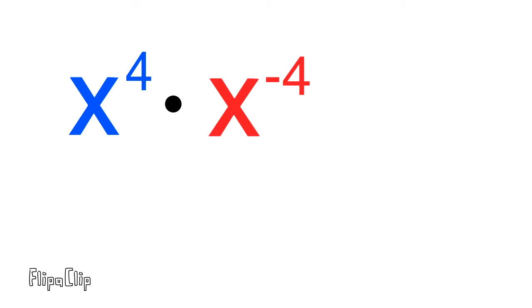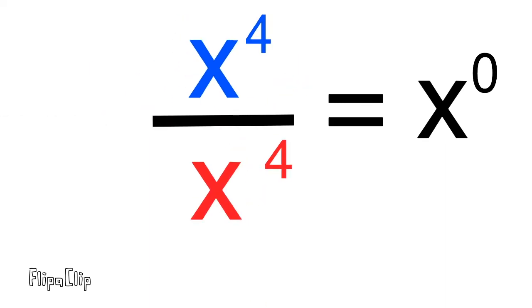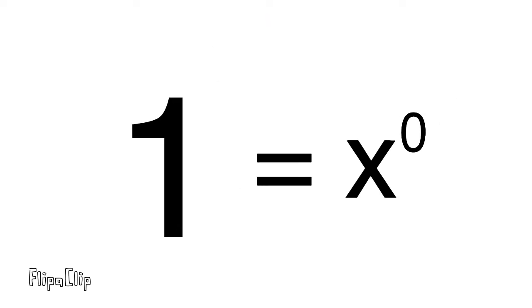Let's do another one using the variable x as the base number. x to the power of four times x to the power of negative four equals x to the power of zero. We can prove that a few ways. The base number is the same, and exponent four minus exponent four is zero. Since a negative exponent means how many times we divide the base number, we can move the term with the negative exponent to the bottom of a fraction, changing the exponent to a positive. In this case we have x to the power of four over x to the power of four, and any number divided by itself is one. That's one example showing why x to the power of zero equals one.